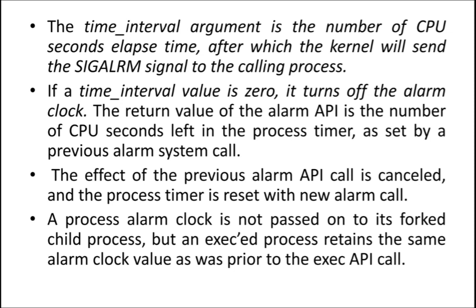One more important thing: if the time interval value is zero, it turns off the alarm clock. Obviously, elapsed time can't be zero, so it will turn off the alarm. The return value of the alarm API is the number of CPU seconds left in the process timer — alarm API is going to return the number of seconds left in the timer. The effect of the previous alarm API call is cancelled and the process timer is reset with a new alarm call. Whatever the time you had set with the previous alarm, that effect will be cancelled and the timer will be reset with the new alarm value.